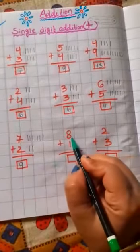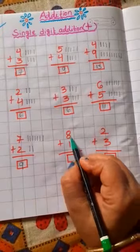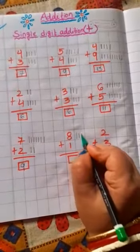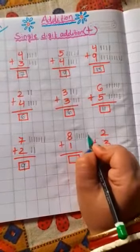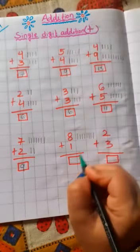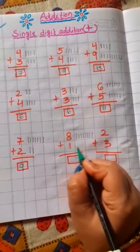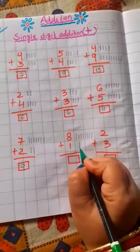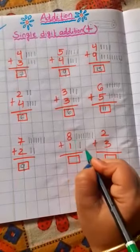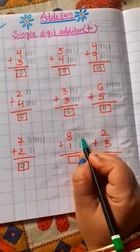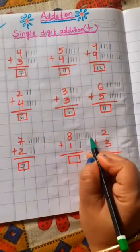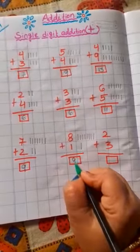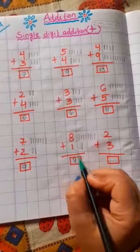Now next number. Which number is this? The first number is 8. You draw here 8 lines: 1, 2, 3, 4, 5, 6, 7, 8. Now which number is this? 1. You draw only 1 line: 1. Now count all the lines together: 1, 2, 3, 4, 5, 6, 7, 8, 9. Your answer is 9. 8 plus 1 is equal to 9.